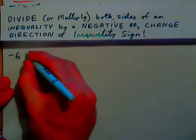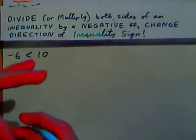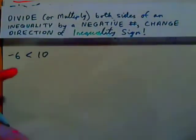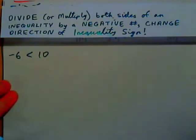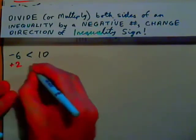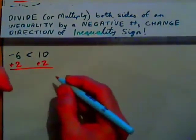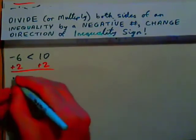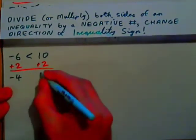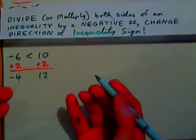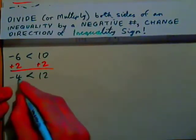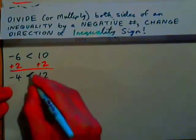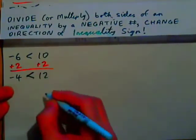Let's explore why that is. Take negative 6: negative 6 is less than 10 — that's a true statement. If we add 2 to both sides, we get negative 4 on the left and 12 on the right. Negative 4 is still less than 12. Notice the point of the inequality sign always goes beside the smaller number, and the gap goes beside the bigger number.